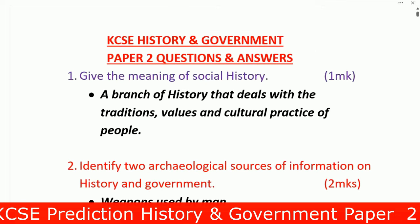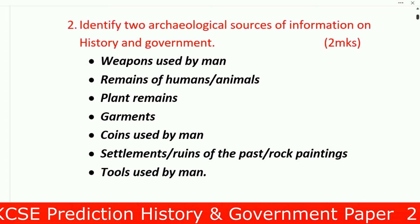Section A, Question 1: Give the meaning of social history. Social history is a branch of history that deals with the traditions, values, and cultural practices of people. Question 2: Identify two archaeological sources of information on history and government. Number one: weapons used by man. Number two: remains of human or animals. Others include plant remains, garments, coins used by man, settlements or ruins of the past, rock paintings, and tools used by man.